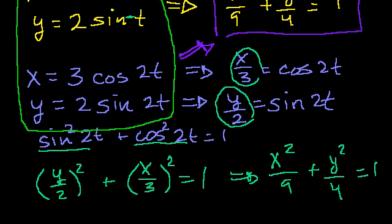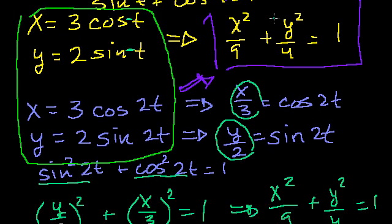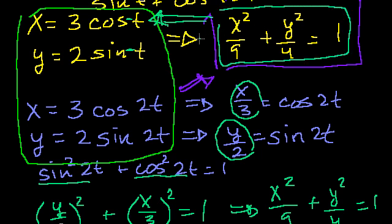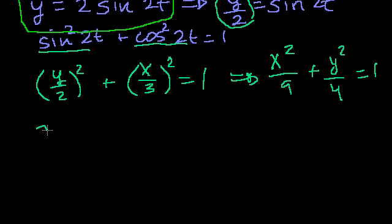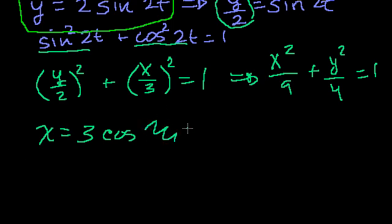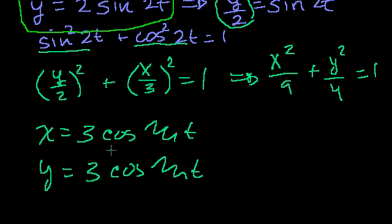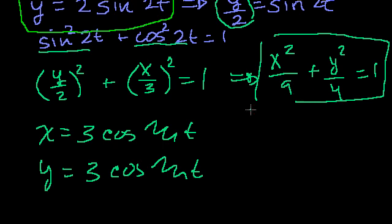One thing you've probably been thinking is: I was able to go from parametric equations to this equation of an ellipse in terms of just x and y — can you go back the other way? The answer is no, because there's no way with just the information given in the x-y equation to know which parametric equation to go back to. There's an infinite number of possibilities — anything of the form x equals 3 cosine of (anything times t) and y equals 2 sine of (that same anything) will converge to the same shape.